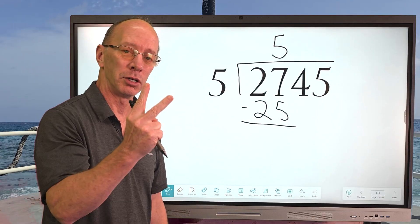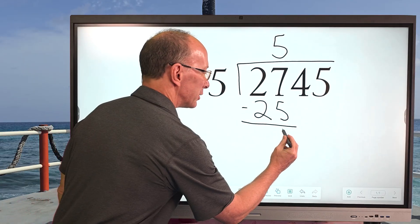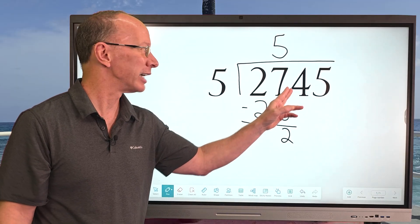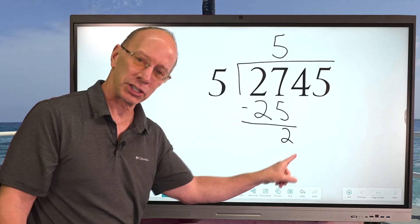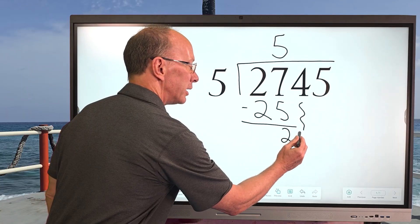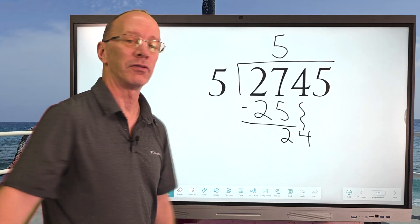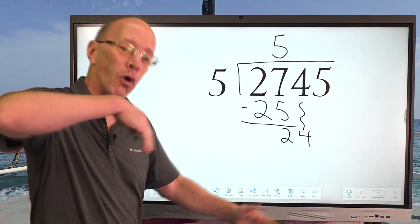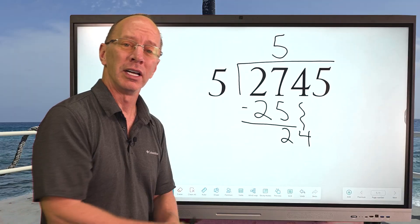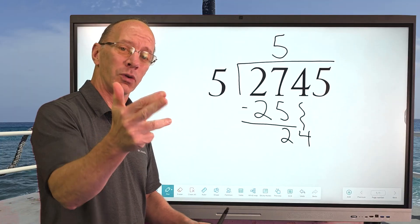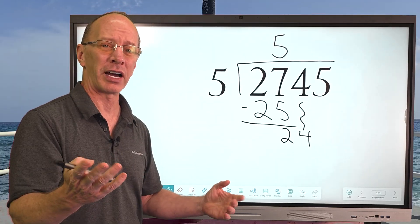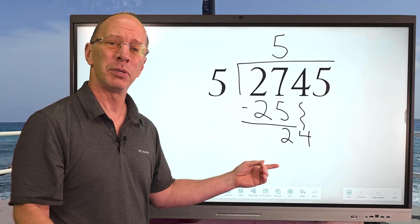So I'm going to go ahead and subtract: 7 minus 5 is 2 — put the 2 right here. Then our next step is bringing the next number down — we take that number and just bring it straight down right here. We have 24, so again we start the whole process over. How many times can I put 5 into 24? 5, 10, 15, 20 — four times.